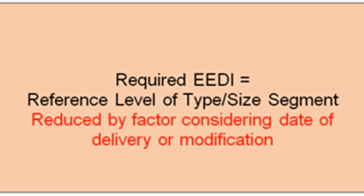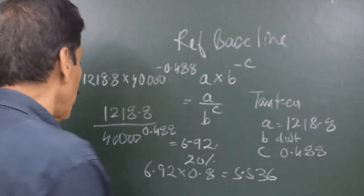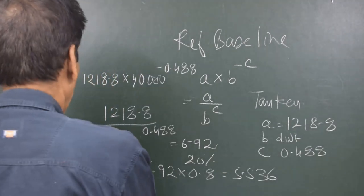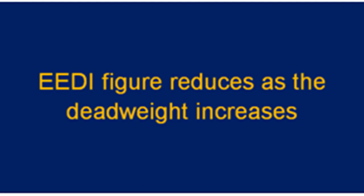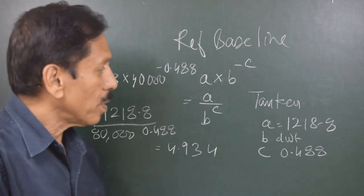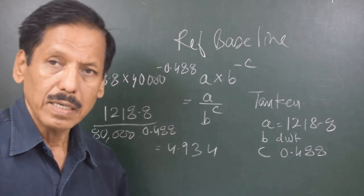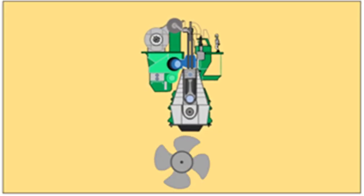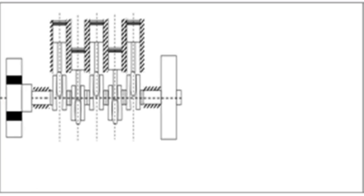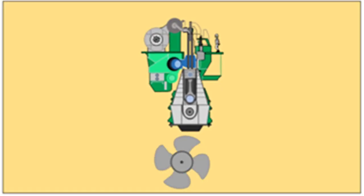So we have the baseline figure and the required EEDI. Similarly, for a tanker carrying 80,000 DWT, the baseline figure comes to 4.934. As the dead weight increases, the figure becomes tighter and tighter. The dynamic feature of EEDI is responsible for continued innovation and technical development influencing fuel efficiency. Ship designers and builders are free to use the most cost-efficient solutions as long as the ship complies with the regulations.